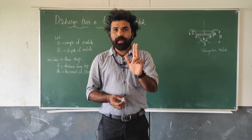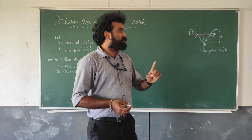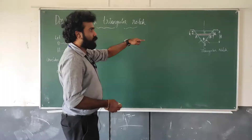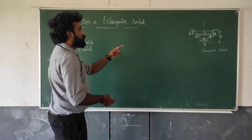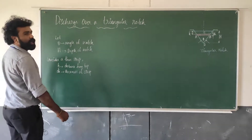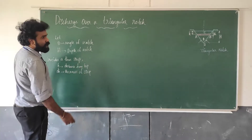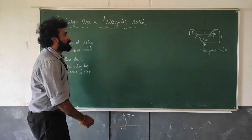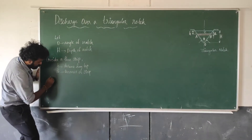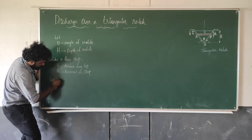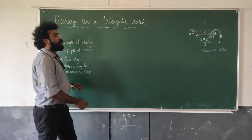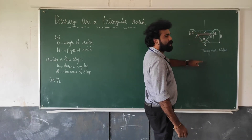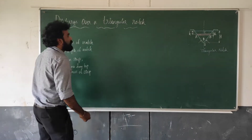The discharge formula is: dQ = CD × area × velocity. This is not a rectangular strip — it is a triangular notch, so we need to calculate the width of the strip. Consider the half-triangle OCA. Triangle O, C, A is a right-angle triangle, where the half-angle at O is theta by 2.